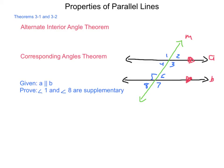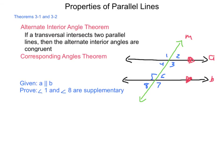Theorem 3.1 is the alternate interior angle theorem. This states that if a transversal intersects two parallel lines, then the alternate interior angles are congruent. This is developed from what we just worked: angles 3 and 6 are supplementary, and based on linear pairs, angles 5 and 6 are supplementary. So if we eliminate angle 6, then angles 3 and 5 must be congruent, because both are supplements of 6. Using the same logic, angles 4 and 6 are also congruent to one another.